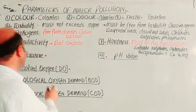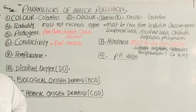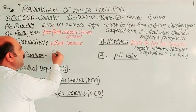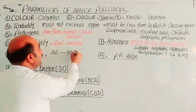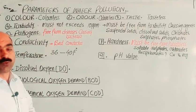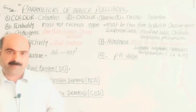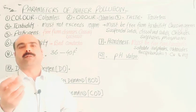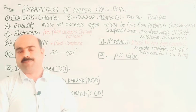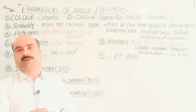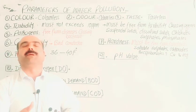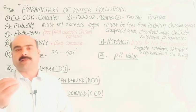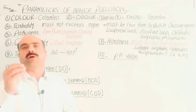Temperature: pure water temperature must be in the range of 36 to 40 degrees Fahrenheit. At higher temperatures, dissolved oxygen decreases because the solubility of gases decreases with increasing temperature. Reduced dissolved oxygen endangers the survival of aquatic plants and animals. Therefore, temperature must be maintained in this range.